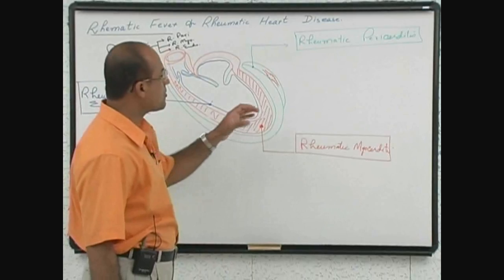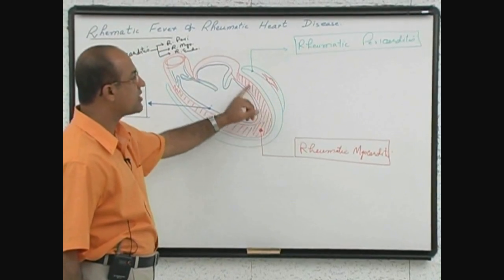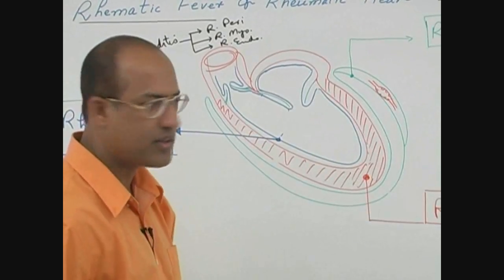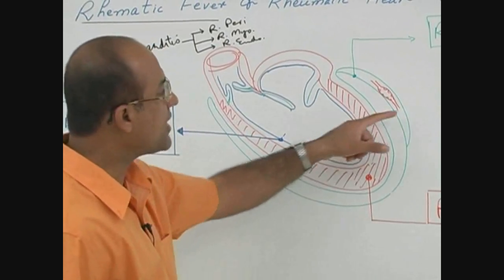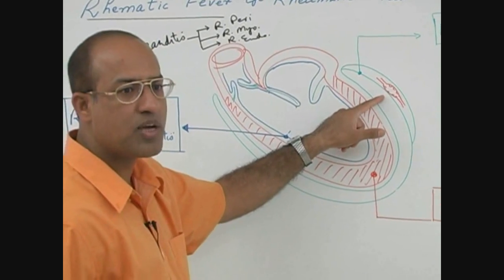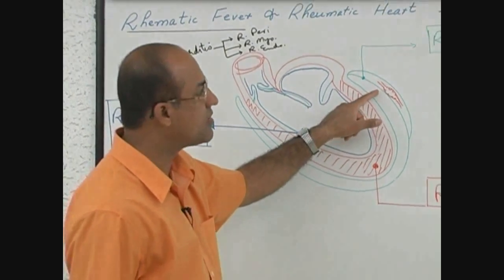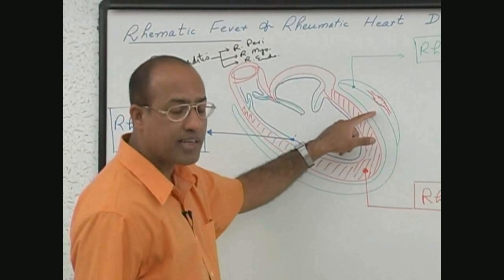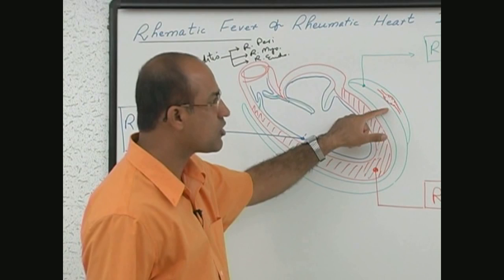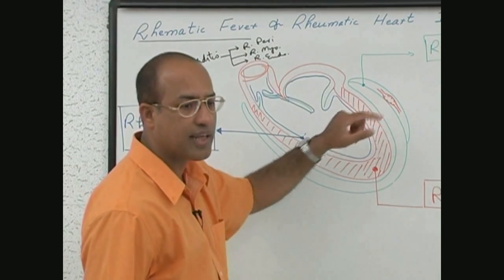When a patient develops rheumatic pericarditis, the immune system is attacking the pericardial tissue — the parietal as well as visceral pericardium. When the pericardium gets inflamed, the capillaries in the pericardium develop very high permeability.